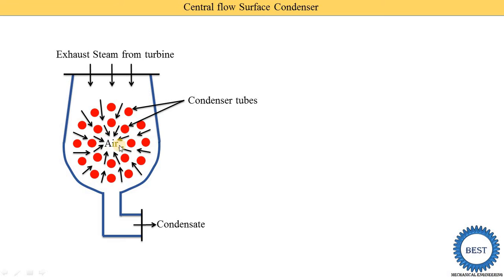From the center of the condenser, air is extracted using the air extraction pump. This portion is called the air cooling section.